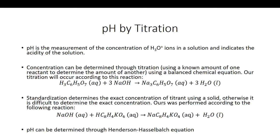In our case, our titration will be titrating citric acid with sodium hydroxide, which will generate sodium citrate and three waters. It's important to realize that the reaction will be a 3-to-1 mole ratio of sodium hydroxide to citric acid, because it takes three sodium hydroxides per one citric acid to balance this equation.